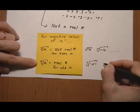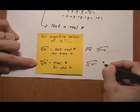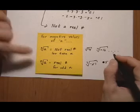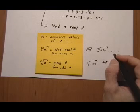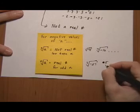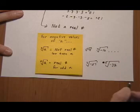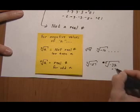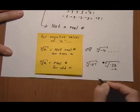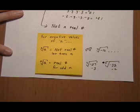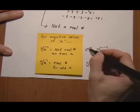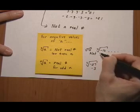Another example: the fifth root of negative 32 — since 2 to the fifth is 32 — gives us a real number. That would be negative 2. These even-root cases with negatives are both not real.